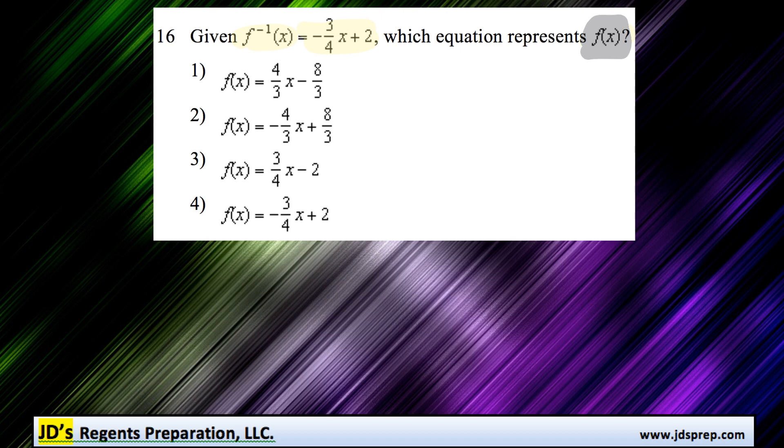Let's try it out. Imagining this as y equals negative 3 quarters x plus 2, we're going to rewrite the equation and flip the positions of x and y. So now it'll be x equals negative 3 quarters y plus 2.